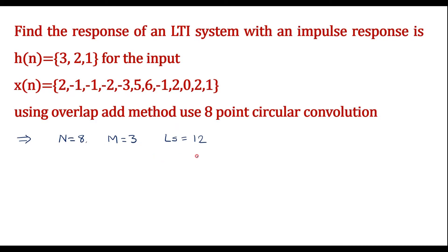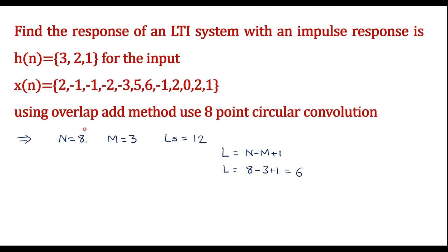For that, we calculate L using the formula L = N − M + 1, that is L = 8 − 3 + 1, which is equal to 6. This L equal to 6 indicates that while dividing x(n) into sub-blocks, each sub-block consists of 6 samples of x(n) followed by M − 1 samples of zeros.